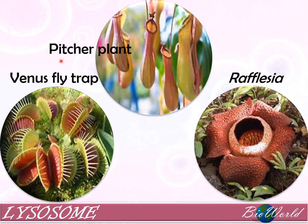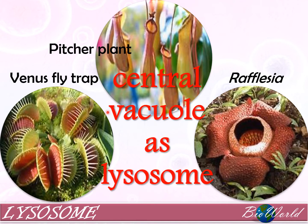These are the carnivorous plants: the pitcher plant, the Venus flytrap, and the Rafflesia. They digest insects using the central vacuole. The central vacuole of plant cells contains hydrolytic enzymes that function like lysosomes.